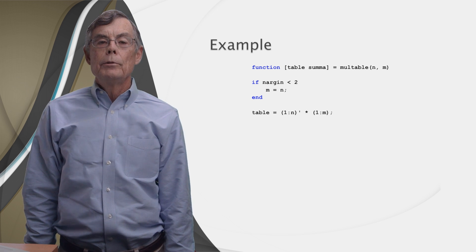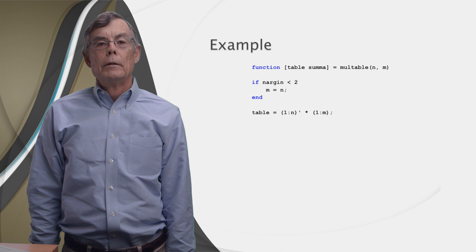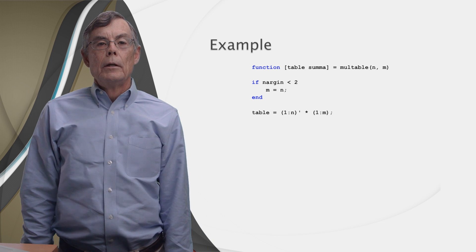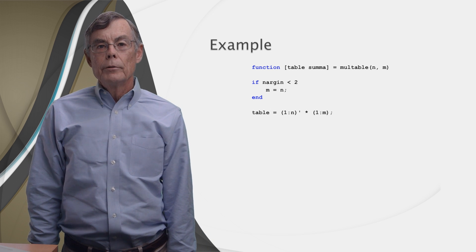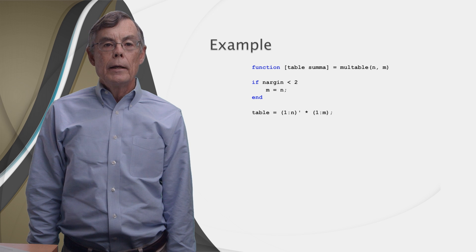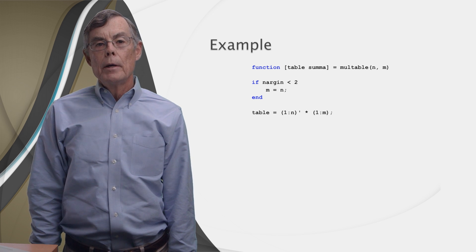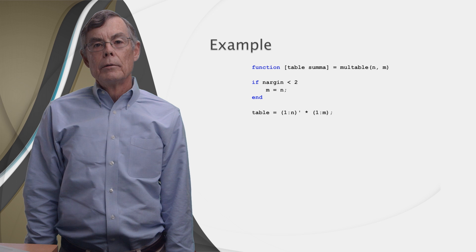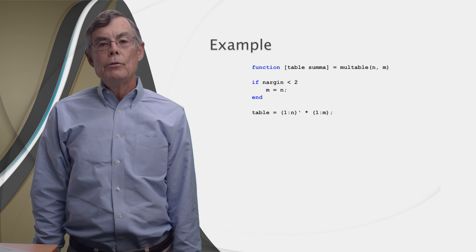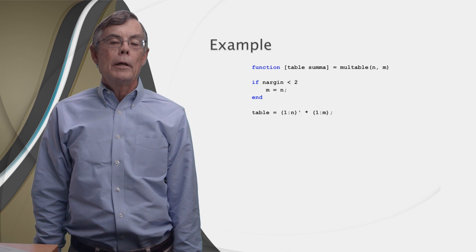Now we're ready to compute the multiplication table. It's actually pretty simple. We create two row vectors, one going from one to n and the other from one to m. We transpose the first vector to be a column vector and use matrix multiplication to create the table.